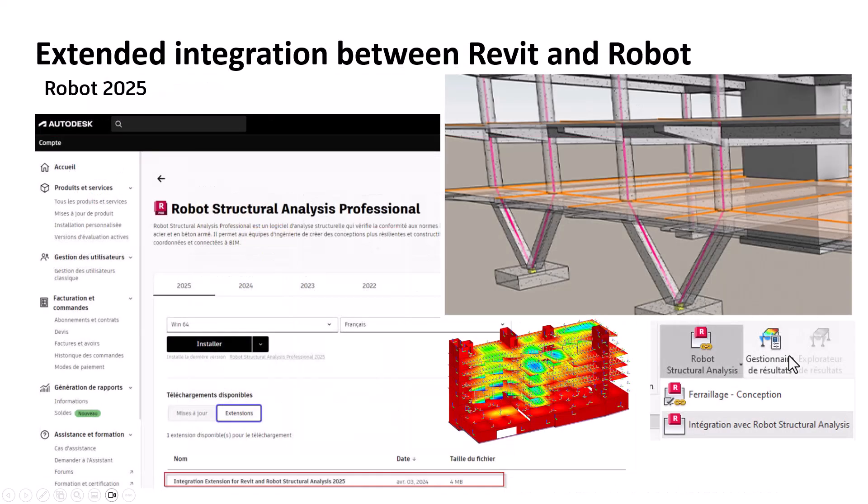If I look at the better integration between Revit and Robot, now you need to download an extension to have the link. It will be the same as before but you will have directly the Result Connect, and in the past the link was already in but you needed to add an extension for Result Connect. Now you have both.